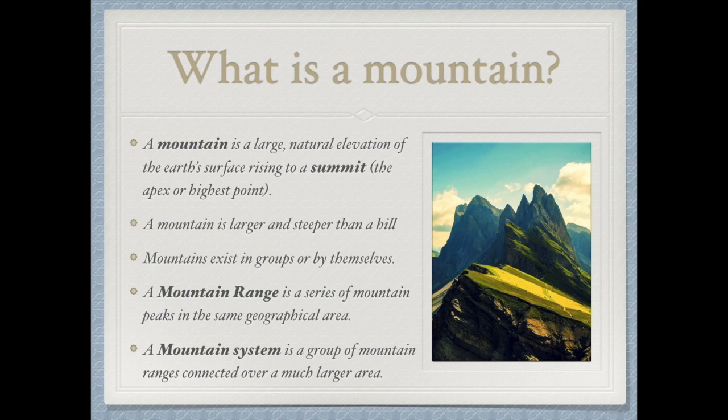Mountains are larger than hills and steeper than hills. Mountains can exist in groups or by themselves. A mountain range is a series of mountain peaks in the same geographical area, while a mountain system is a group of mountain ranges connected over a much larger area.